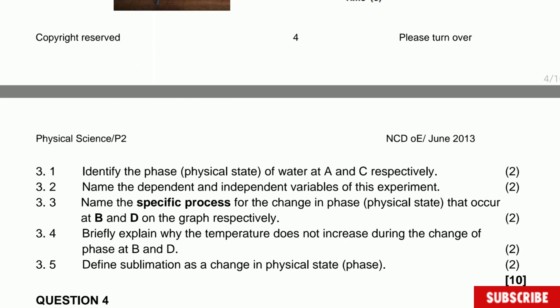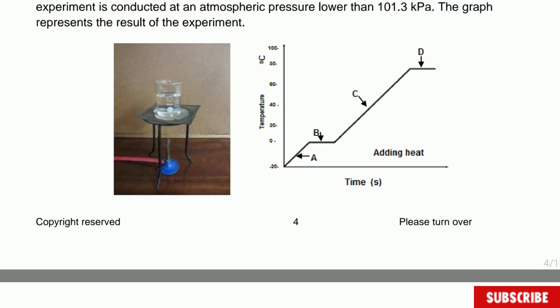Identify the phase or physical state of water at A and C respectively. Now we can use this opportunity to write the state on each of the different parts of the graph. So the substance here at A is going to be in solid state. As the temperature increases, it's going to start melting. So at B, at B, you will have now two states. They will be solid and liquid.